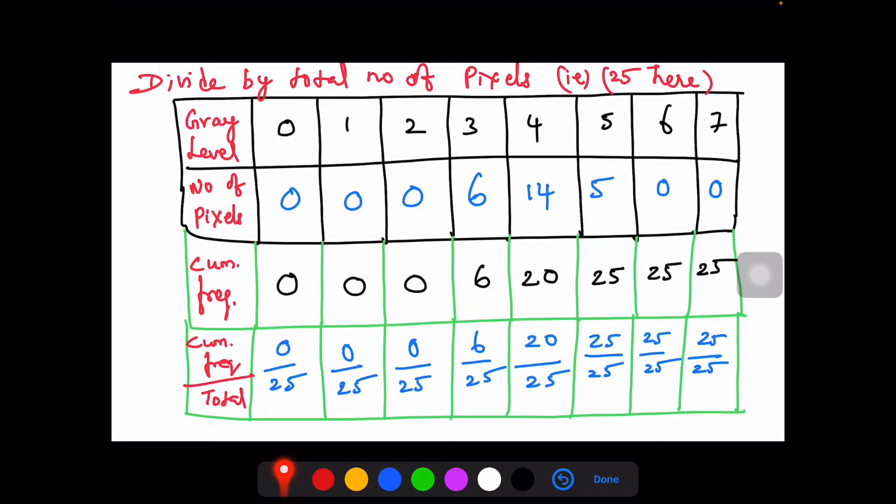After finding that, divide all the cumulative frequency terms by the total number of pixels. Here the total number of pixel values is 25. Divide all the terms by 25: 0 by 25, 6 by 25, 20 by 25, goes on till 25 by 25. This is the next step.